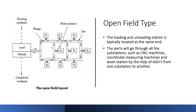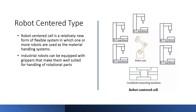Open field type: similar to the ladder type, the loading and unloading station is the same. The part will go through all the stations — such as CNC machines, coordinate measuring machines, and wash stations — with the help of AGVs moving from one station to another.